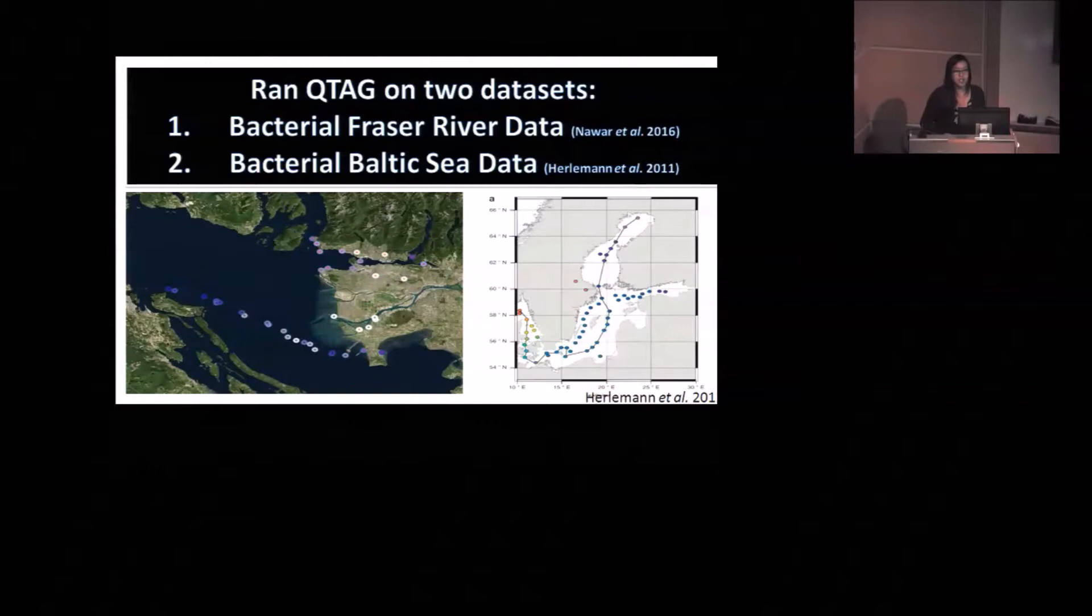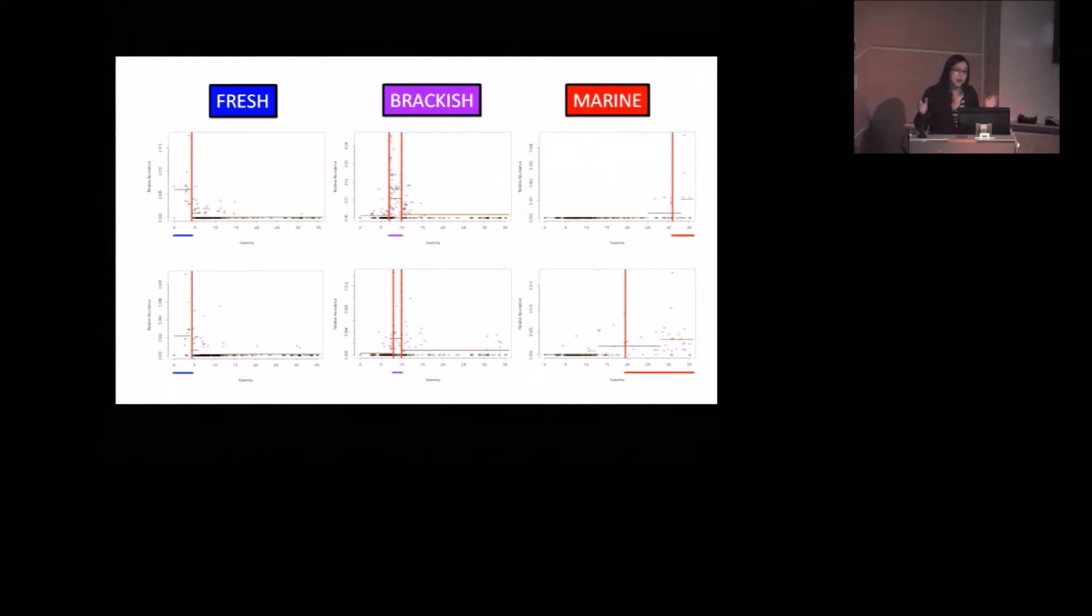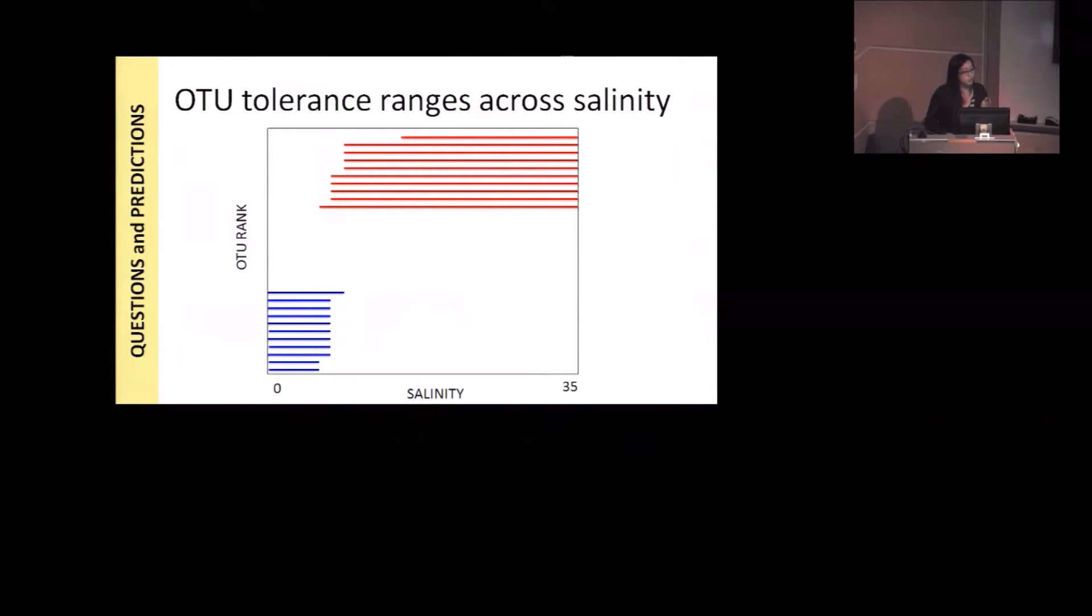Recall you have a hundred or maybe a thousand OTUs that QTAG has classified and drawn boundaries for. You get these little bars on the bottom, the blue, purple, and red bars. If you take them and stack them up, you get a plot that looks like this, which is showing you the OTU turnover for every single OTU across the entire community, across the entire gradient. On the y-axis is an OTU rank, sorting OTUs by the mean of its tolerance range. On the x-axis is salinity. You can see as you go along salinity, there are freshwater specialists that are abundant and then they drop off. And then marine water specialists that come into play and then last until the end of the gradient.